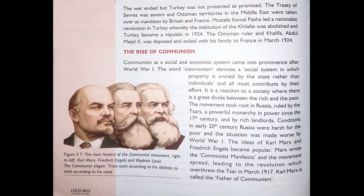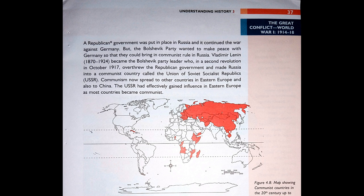A republican government was put in place in Russia and it continued the war against Germany. In a republican system of government, power is held by the people or the representatives they elect. But the Bolshevik party wanted to make peace with Germany so that they could bring in communist rule in Russia. Vladimir Lenin (1870 to 1924) became the Bolshevik party leader, who in a second revolution in October 1917 overthrew the republican government and made Russia into a communist country called the Union of Soviet Socialist Republics (USSR). Communism now spread to other countries in eastern and western Europe and to China. The USSR had effectively gained influence in eastern Europe as most countries became communist.